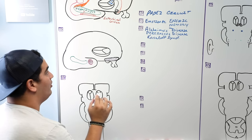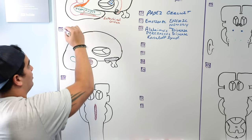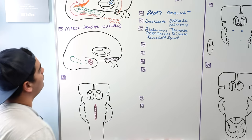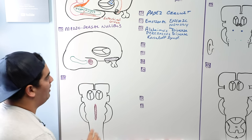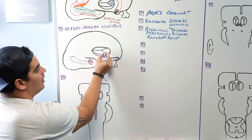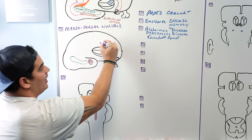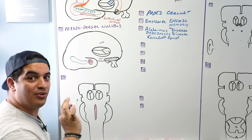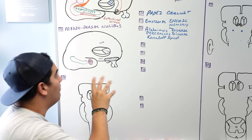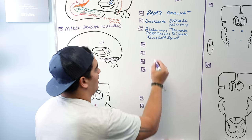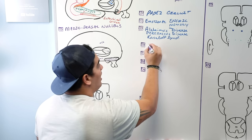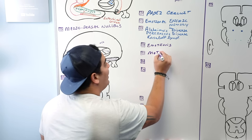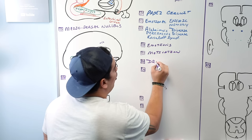The medial dorsal nucleus — also called the dorsomedial nucleus, the terms are interchangeable — is located on the medial side of the thalamus. It is another important component of the limbic system. There are three important things to know about it: it's involved in emotional memory, motivation, and drive. Whenever there is damage to this nucleus, it can affect the emotional aspect of memory, motivation, and drive, leading to personality changes.